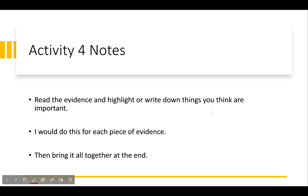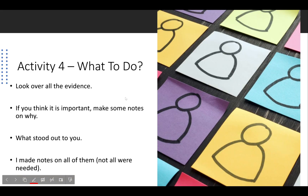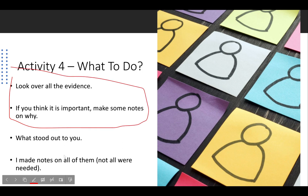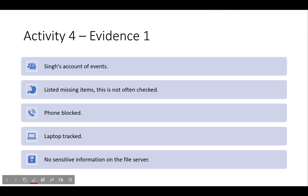I would do this for each piece of evidence and then bring it all together at the end. Look over all the evidence, and if something seems important, make some notes — this will come in very handy. I made notes on all pieces of evidence; not all were needed but I did it anyway. For Evidence 1, Singh's account of events, he listed missing items.